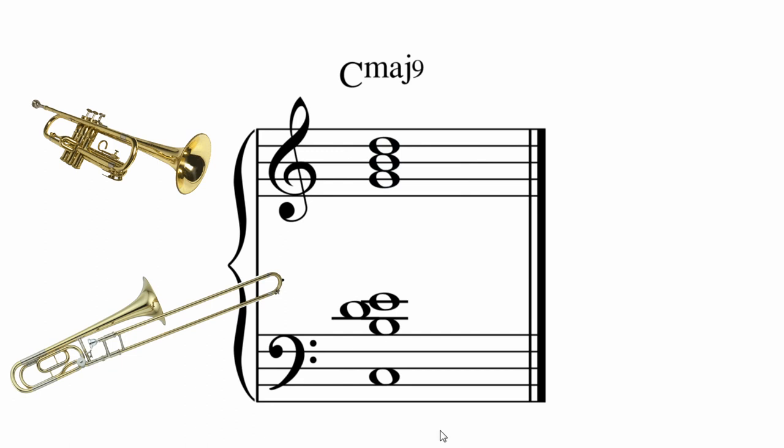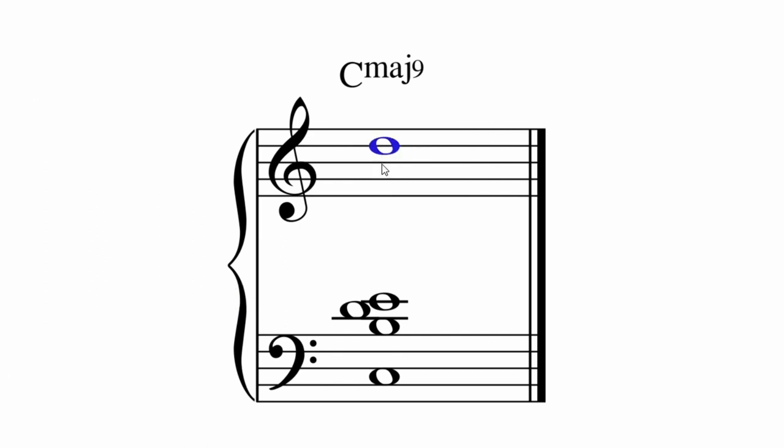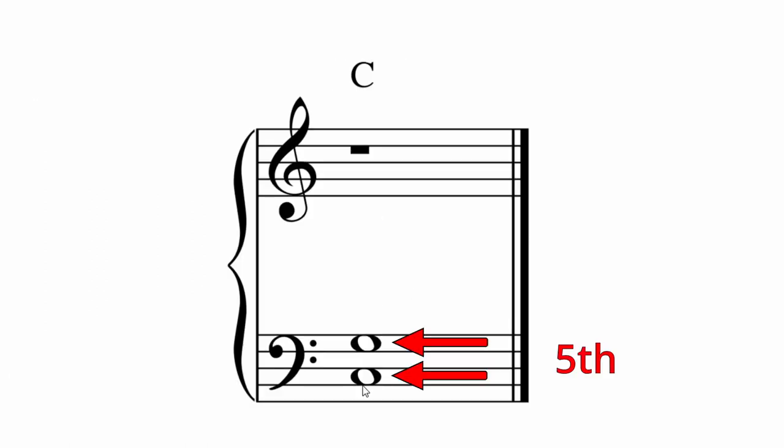That could be three trumpets above, for instance. It's still a C maj9. When you have a fifth down low, especially in a strong instrument like trombones, you can put all sorts of things above. It's quite an interesting effect.